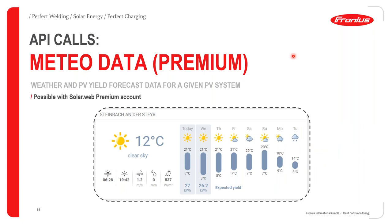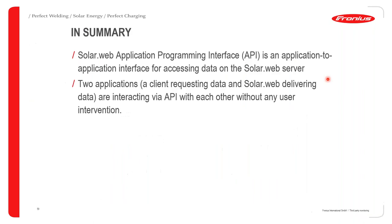The premium data section, including weather and PV yield forecast for a given system, can also be queried through an API call — but this is only possible when using a premium SolarWeb account.